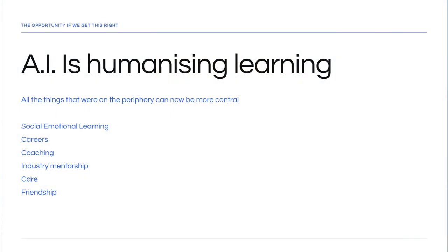Hi there, I'm Serge Hunt, founder of Cities of School. AI is humanizing education. All the things that were on the periphery or felt like add-ons or things you had to squeeze into your normal educational practice are now becoming front and center. From social emotional learning, careers, coaching, mentorship, and just being a good friend are all coming into the center of the classroom as AI frees up more time for us to focus on what's truly important.